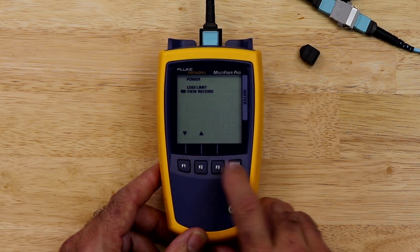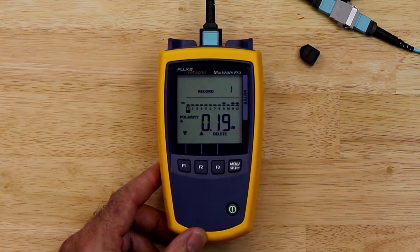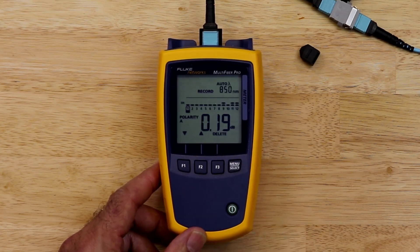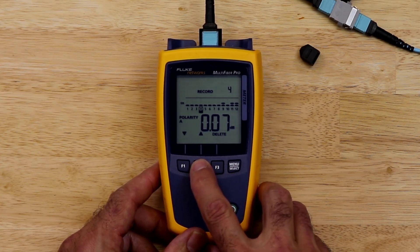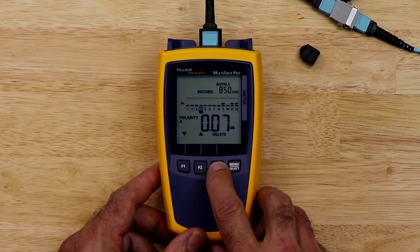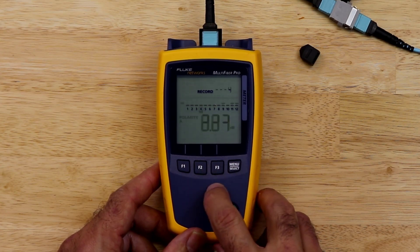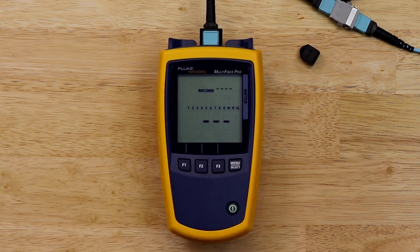Then press F1 to go down to view record. Press menu select. You can now use the F1 and F2 buttons to scroll through the saved test results. To delete a set of results, press F3 once and delete question mark will appear. Press and hold F3 until the record is deleted. The meter can store up to 3000 loss results. This is equal to 250 MPO links each with 12 fibers.